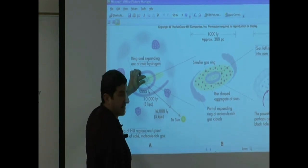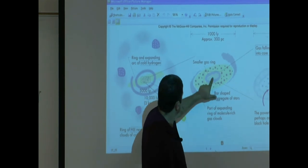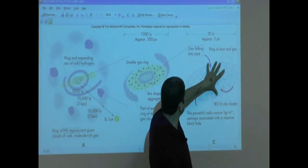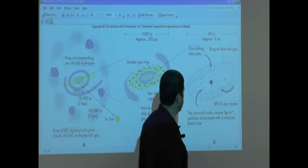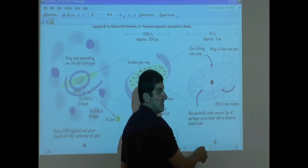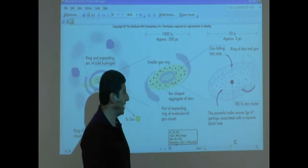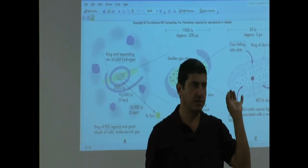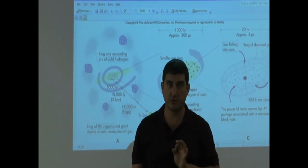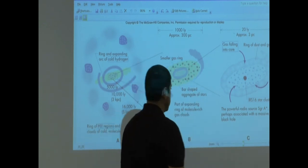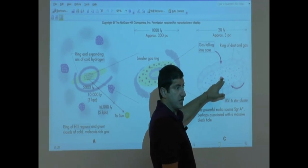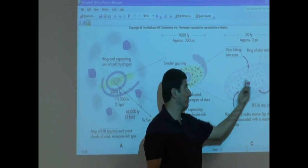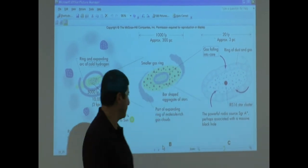And then when we look at the center, we see lots of activity happening. And when we blow that up, we see smaller gas ring, bar-shaped aggregate of stars, part of expanding ring of molecule-rich gas. When we blow it up even more: gas falling into the core, ring of dust and gas. And then we notice there's a powerful radio source here emitting lots of energy, a powerful radio source called Sagittarius A, perhaps associated with a massive black hole. So there's a lot of research being done finding the nature of the centers of galaxies. What's causing this powerful radio and x-ray source? What's causing this high emission? And what we notice is that a lot of galaxies have this behavior. A lot of very powerful energy is being emitted. And we believe it's associated with a supermassive black hole that's gulping out everything around it and emitting lots and lots of energy.